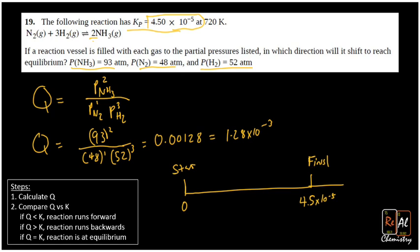10⁻⁵ means this has been divided by 10 five times. This has been divided by 10 three times, so this is a much bigger number. It's way out here, and that means that to get to equilibrium we're going to need to run backwards.